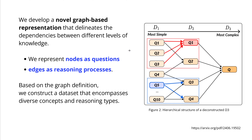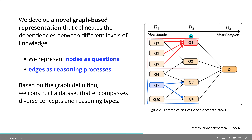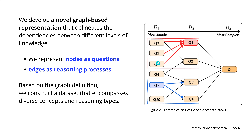They developed a novel graph-based hierarchical representation that delineates the dependency between different layers of knowledge. The nodes are the questions and the edges in this graph represent the reasoning process with different complexity crossing edges. Based on the graph definition, they construct a dataset that encompasses diverse concepts and reasoning types. We have D1 basic knowledge, a more complex D2 layer, and then everything comes together to solve the D3 question — from simplest to most complex.